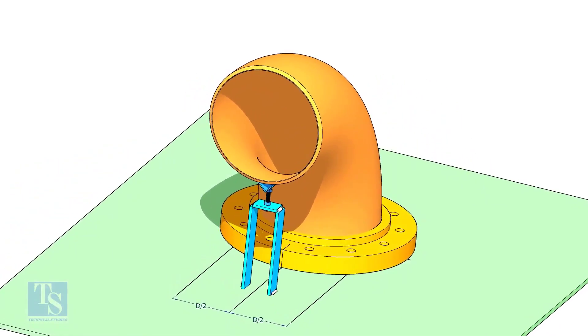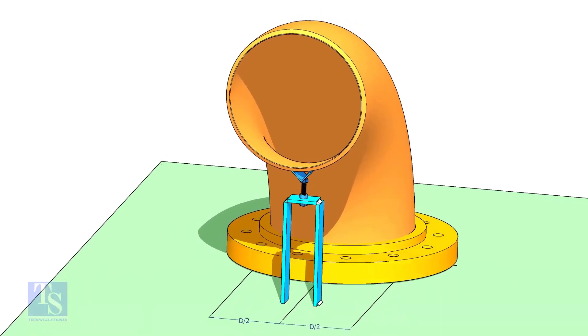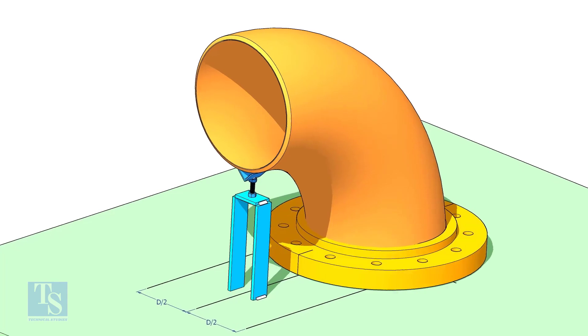If required, tack weld the screw jack below the elbow face as shown. Adjust the height of the bolt and level the face of the reducer.